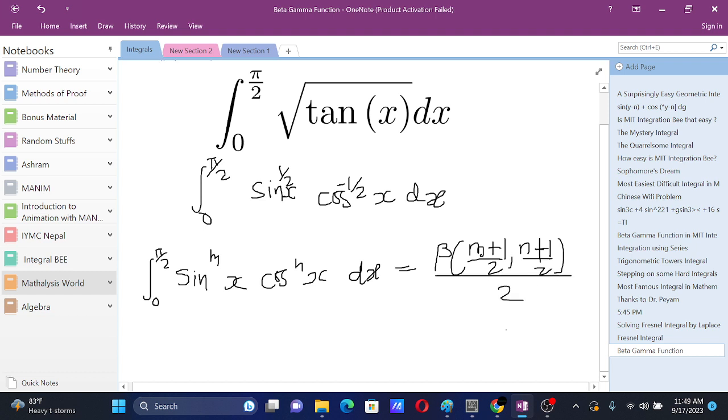Since we have √tan x, we will directly apply beta gamma function and we get beta of 3/4, 1/4 over 2.